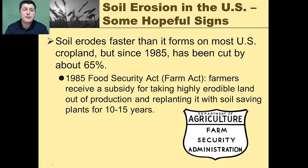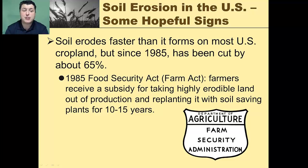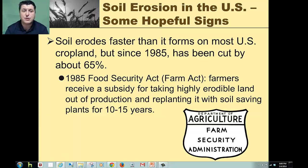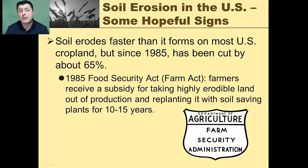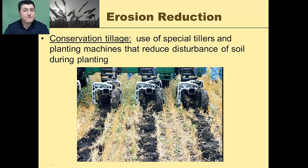Soil will erode faster than it forms on most U.S. cropland, but since 1985, that loss has been cut by about 65%. Part of that was the result of the 1985 Food Securities Act, also known as the Farm Act. Farmers receive a subsidy for taking highly erodible land out of production and replanting it with soil-saving plants for up to 15 years.